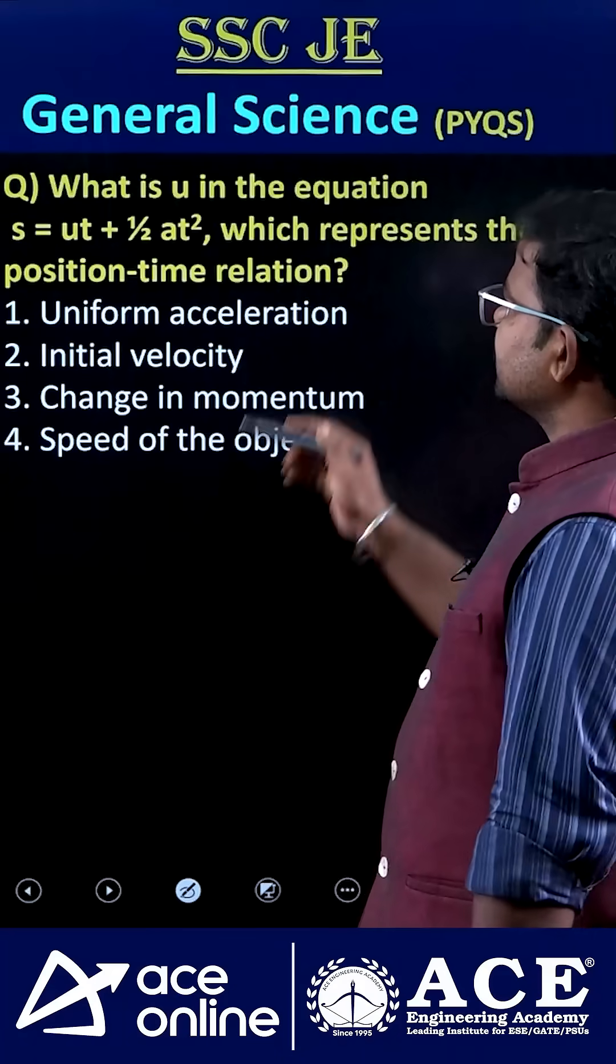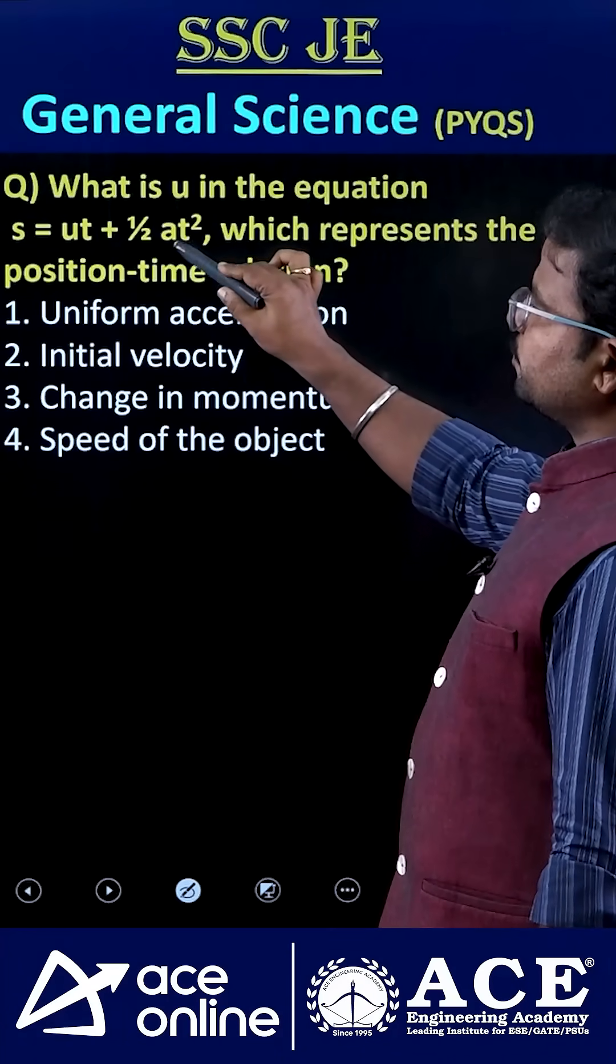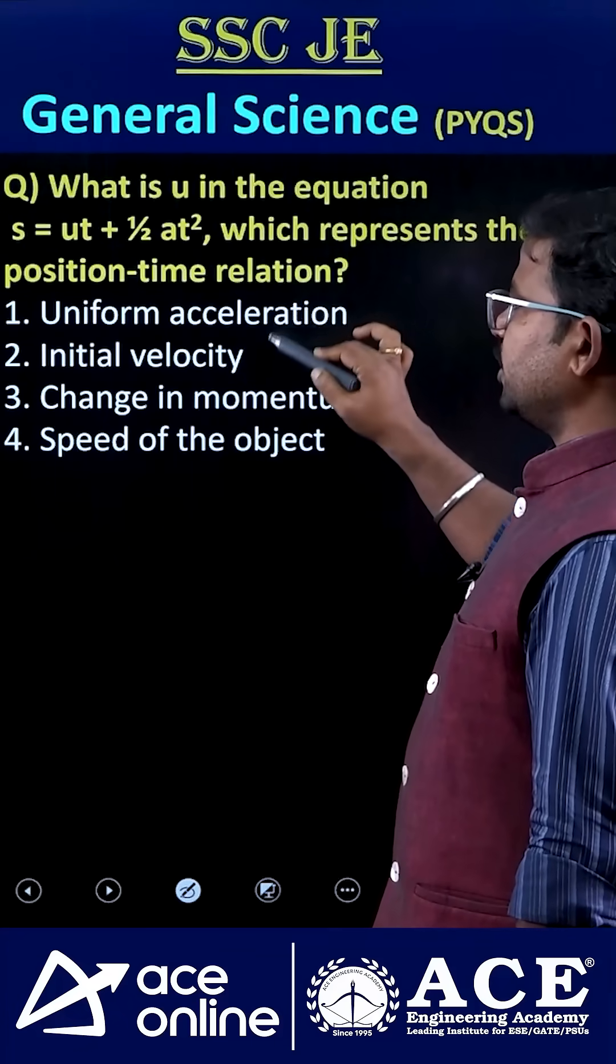Welcome to ASO online. What is u in the equation s equals ut plus half at square, which represents the position-time relation?